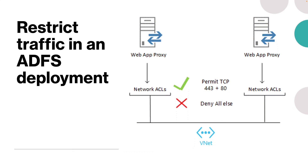Because Azure doesn't provide a native full-featured firewall capability, other options must be used to restrict traffic. You could use Azure network ACLs, which offer lower cost and simpler initial configuration, but require additional ACL configuration whenever new virtual machines are added. Alternatively, you could use a Barracuda NG firewall, though this comes with increased cost and complexity of initial setup. You need to consider all of this when planning to deploy ADFS in Azure.